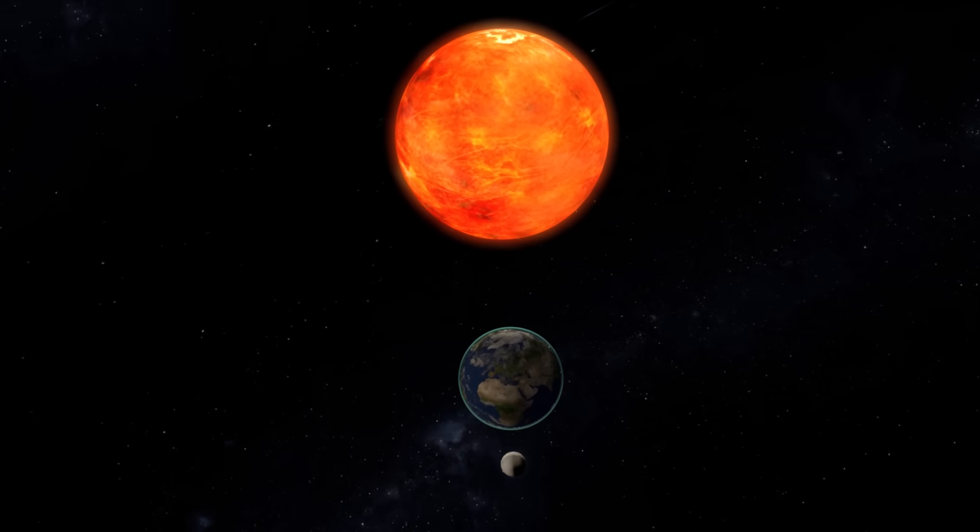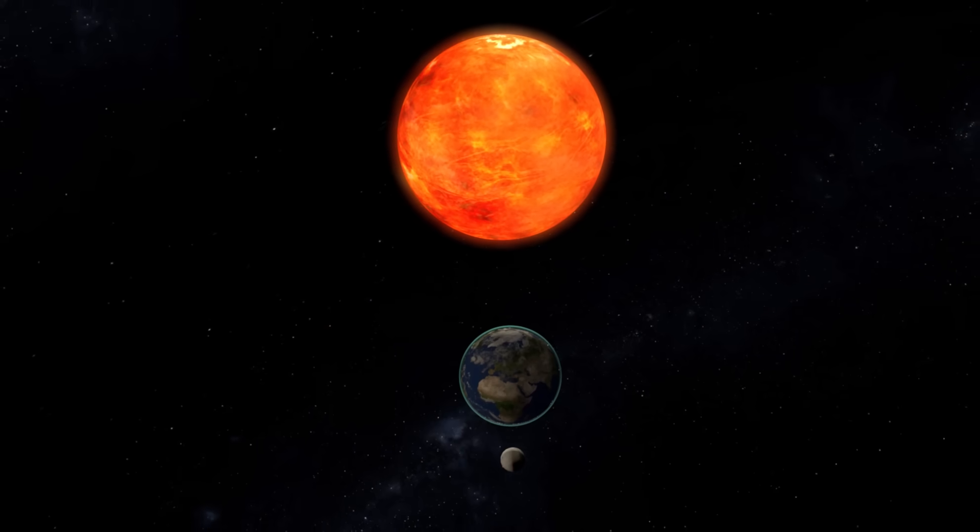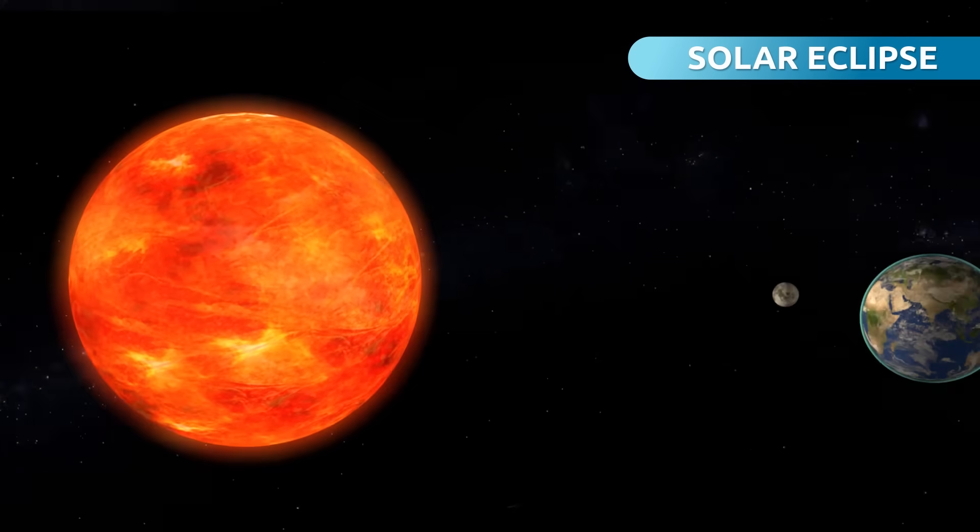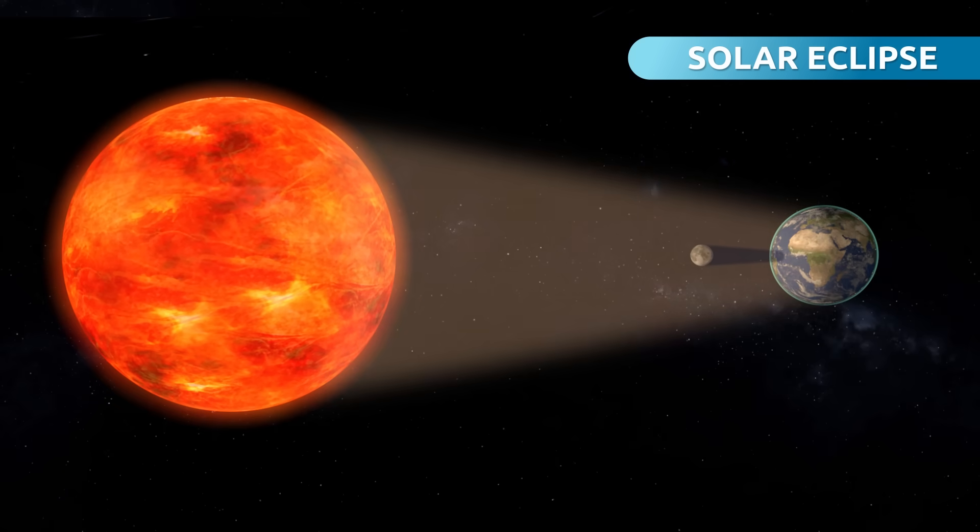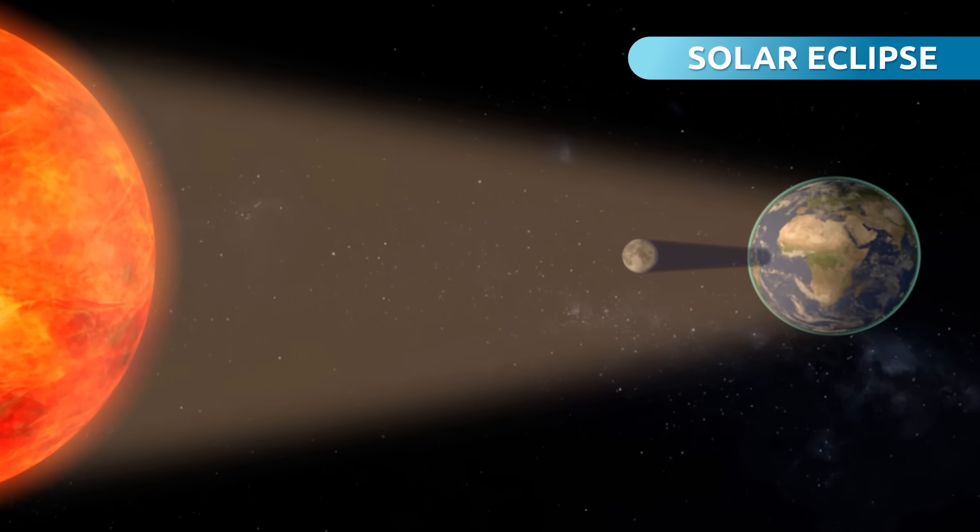I'll tell you about it step by step. A solar eclipse is produced when the Moon comes between the Earth and the Sun, blocking part of the sunlight, or even the entire Sun.